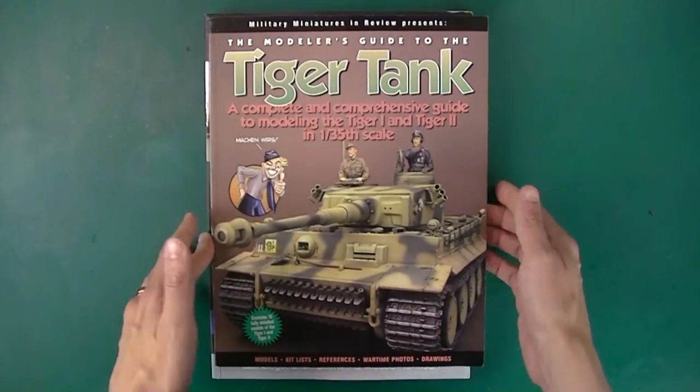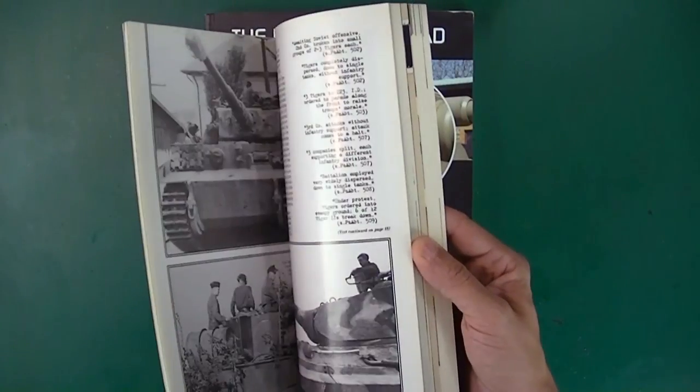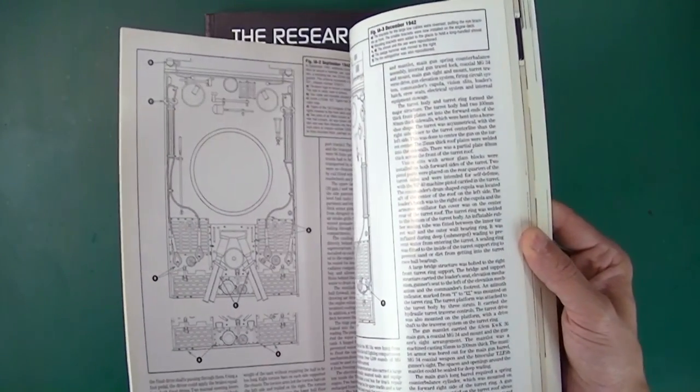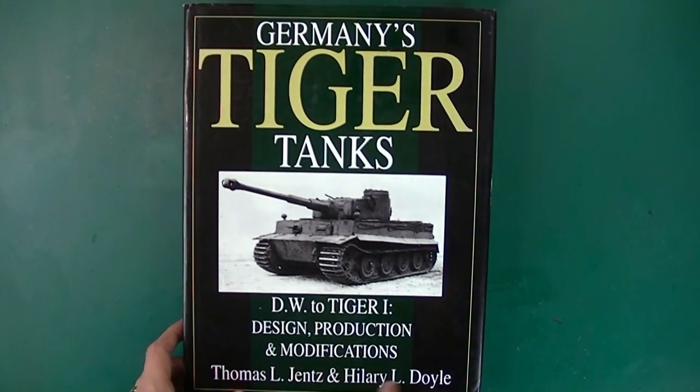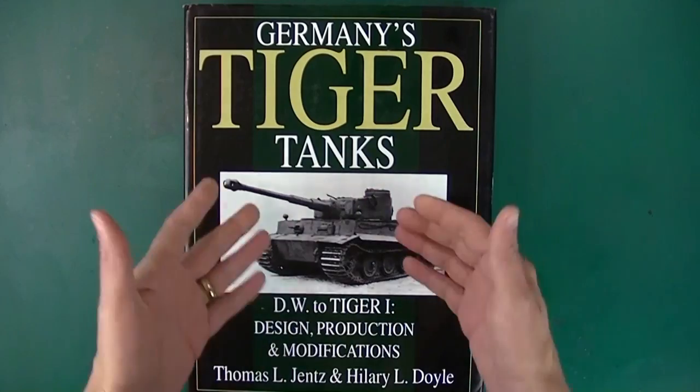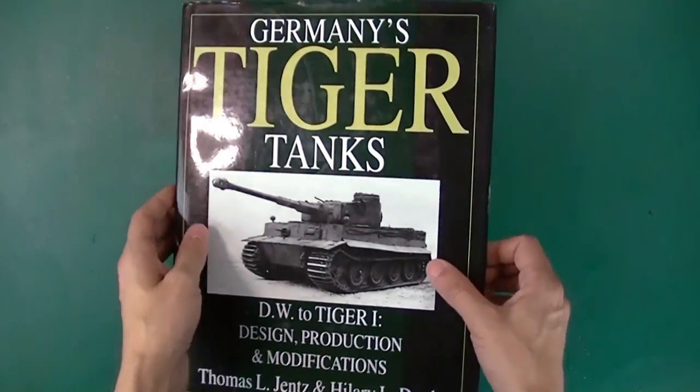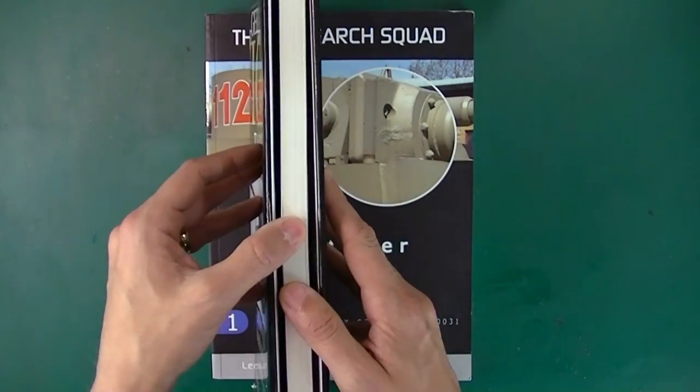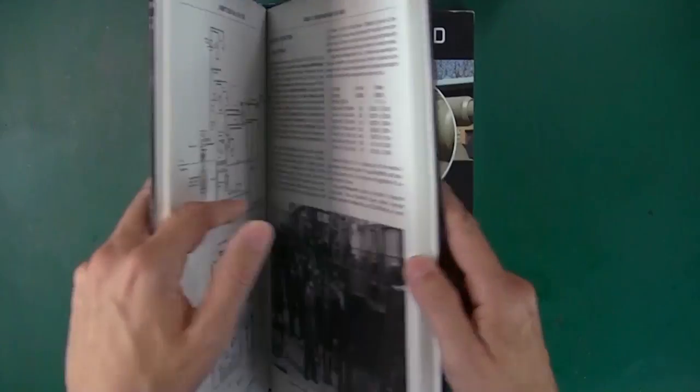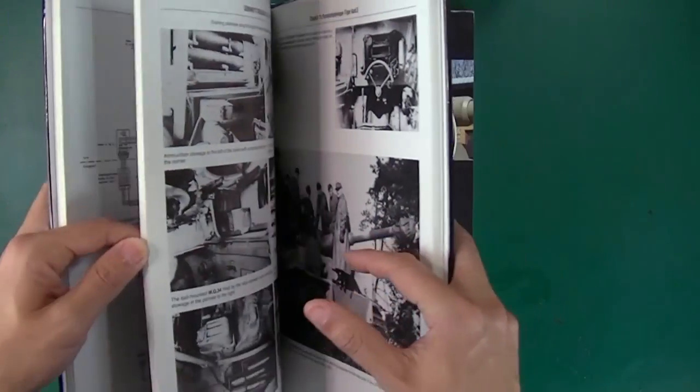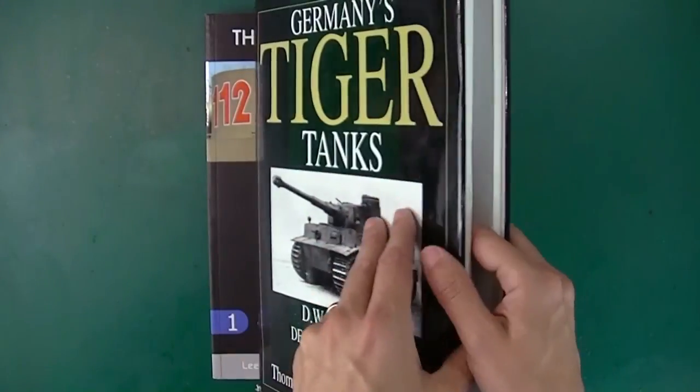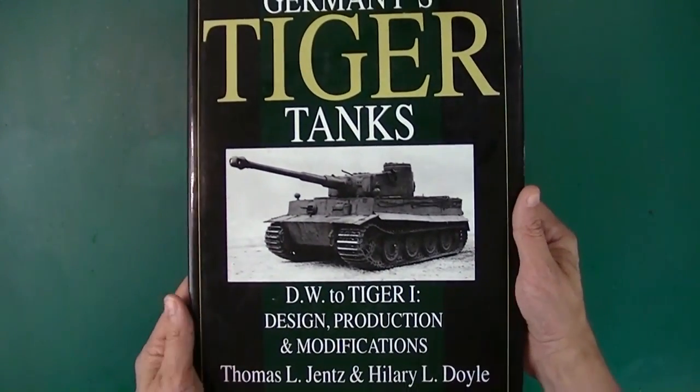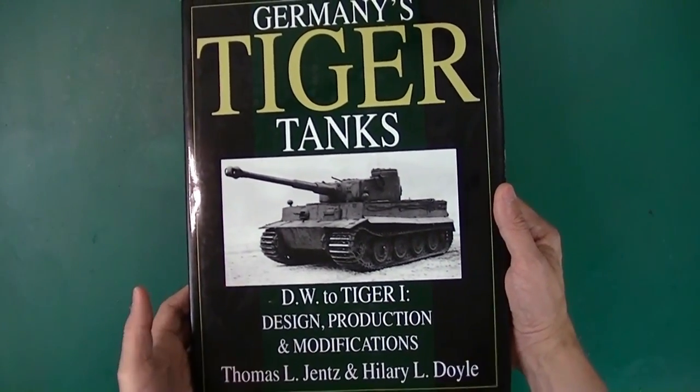We have the Modeler's Guide to the Tiger Tank, which I've reviewed previously. That's got a lot of good layout information about how the vehicles should be done when scale modeling. We have this series. This is Jentz and Doyle. This is DW to Tiger 1. It's like the Bible of Tigers. It's like the book that the Modeler's Guide to the Tiger Tank kind of drew from. This thing is amazing. I haven't reviewed this yet, but it's amazing and it's basically the standard for Tiger reference books.